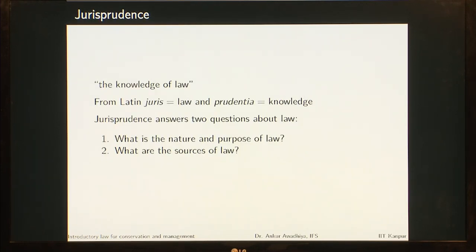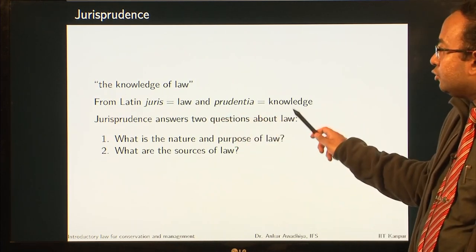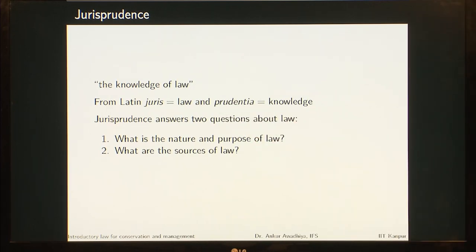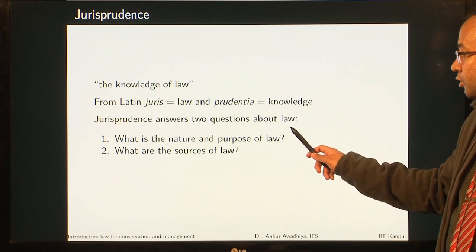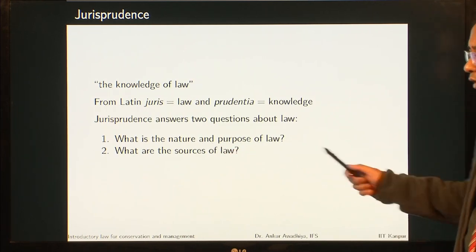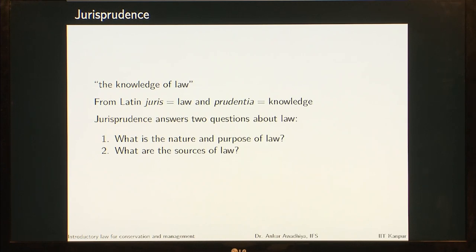Conservation and management are done in a legal setting, which is why we need to know about the law. Knowing about the law is also known as jurisprudence — 'juris' is law and 'prudentia' is knowledge, so jurisprudence is the knowledge of law. We need to know law because we need it in our day-to-day lives, for managing things, and for conserving our forest and wildlife. Knowing about the law answers two questions: what is the nature and purpose of law, and what are the sources of law?